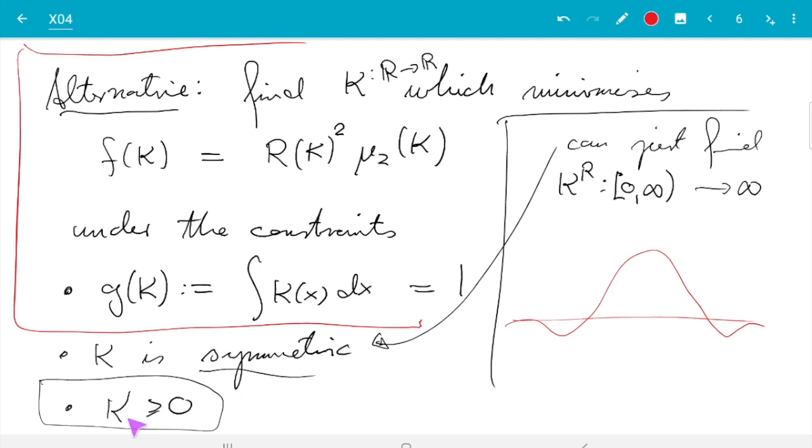The downside is, your estimate for the density can now be negative, because it's made up of copies of k. So it's no longer a density itself, which may or may not be a problem. So we are not considering this here. Our kernels are all positive. And for us, the best possible kernel, as far as mean squared error is concerned, is the Epanechnikov kernel. Good.